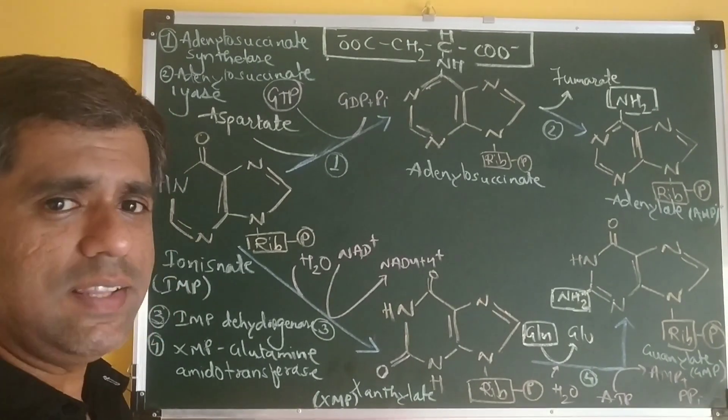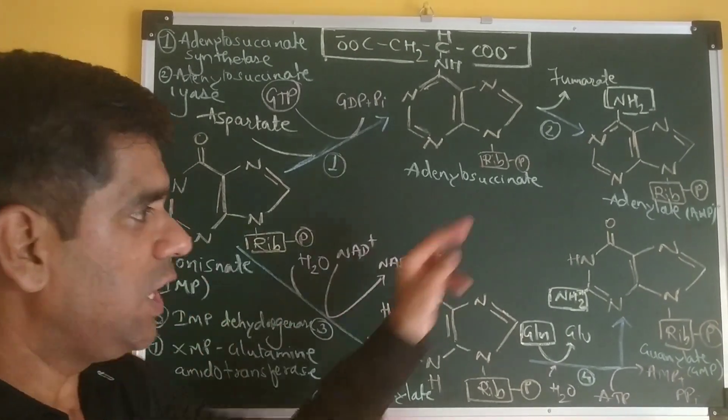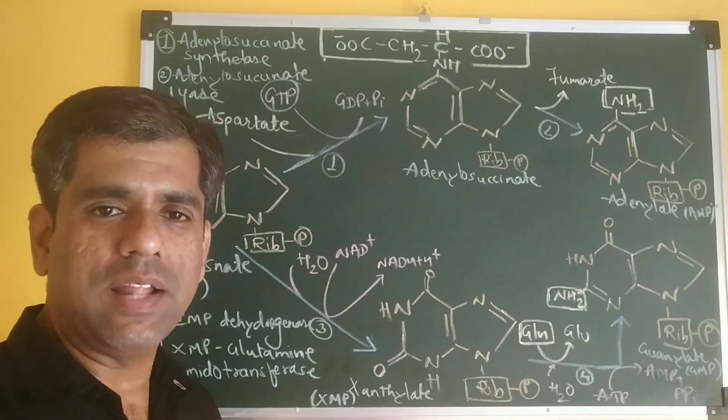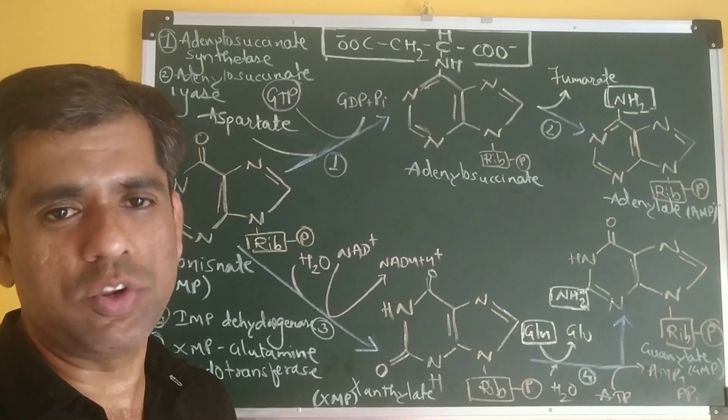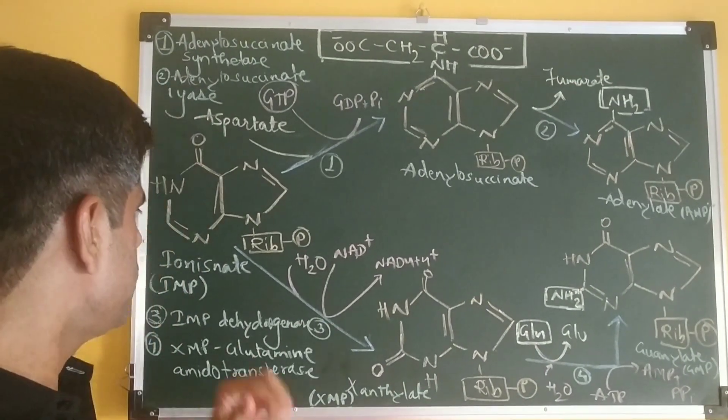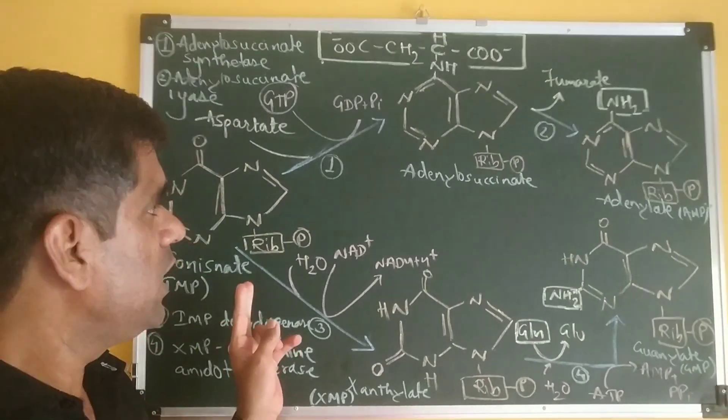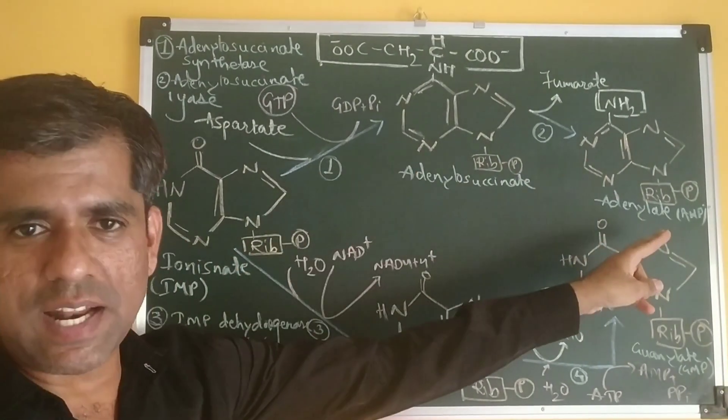Hi friends, today we look at the conversion of IMP into AMP and GMP and thus conclude the synthesis of purine nucleotides. After the synthesis of the intermediate inosinate or IMP, in two steps it is converted to adenylate.